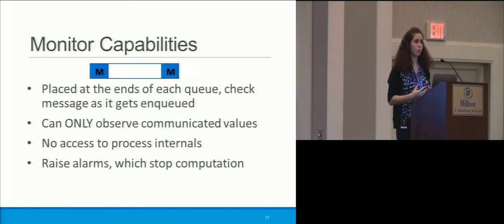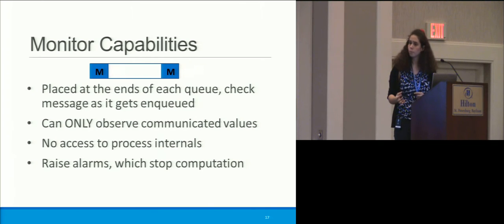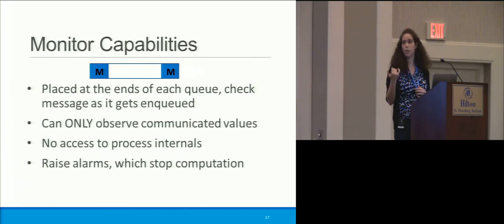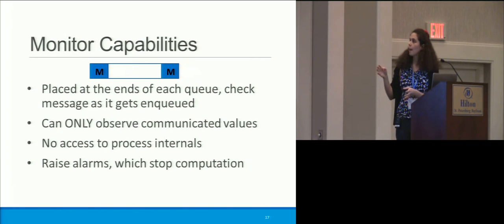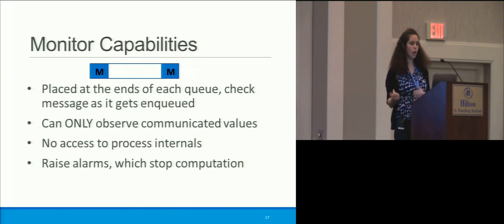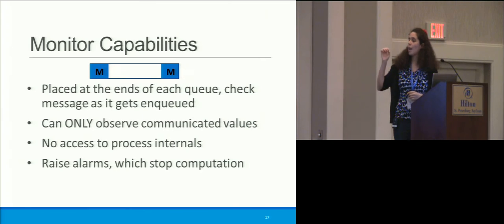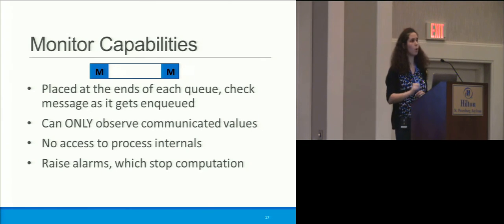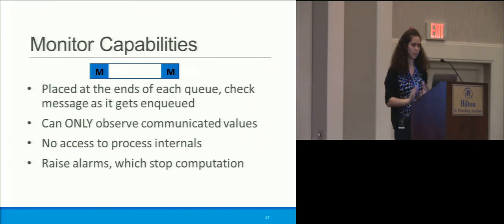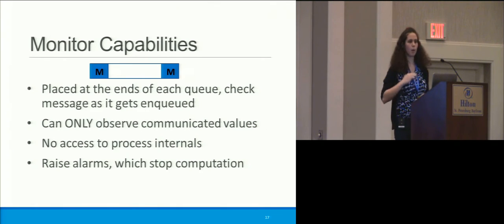What can our monitors do and how do they work? We place monitors at both ends of our monitoring queue because our channels are bi-directional and the queue maintains direction. The monitor is just a type checker: it checks values as they come in and are enqueued into the queue — it doesn't check them again at dequeue, since communication is asynchronous. Our monitors can only observe communicated values; they have no knowledge of process internals or other monitors. When they detect a type violation, they raise an alarm and stop computation immediately.